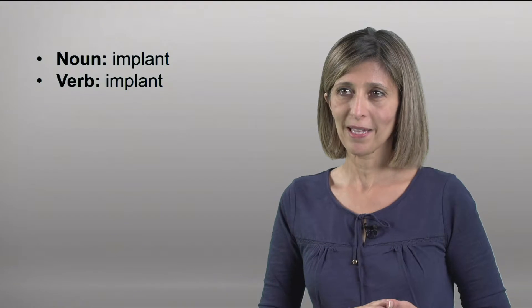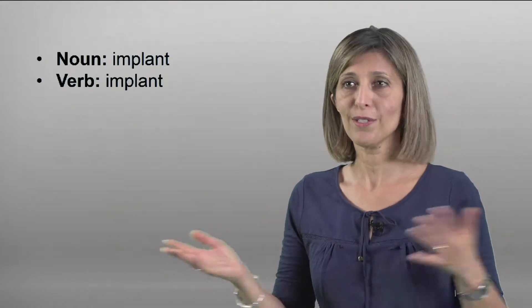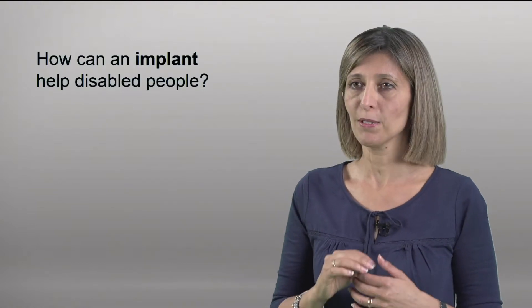Word number five is implant, which can be both a noun and a verb. For example, how can an implant help disabled people?